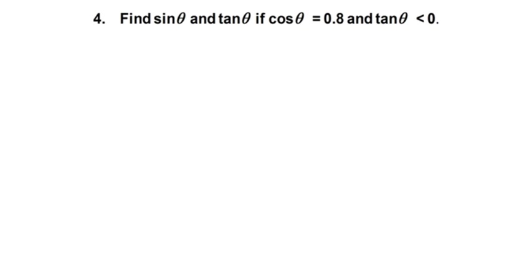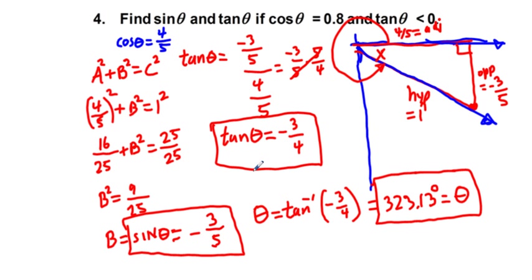Problem four: find sine theta and tangent theta if cosine theta equals 0.8 and tangent theta is less than zero. The clue is that 0.8 can be rewritten as four-fifths. This is similar to problem three. The solution gives tangent theta equals negative three-fourths, sine theta equals negative three-fifths, and theta equals 323.13 degrees.